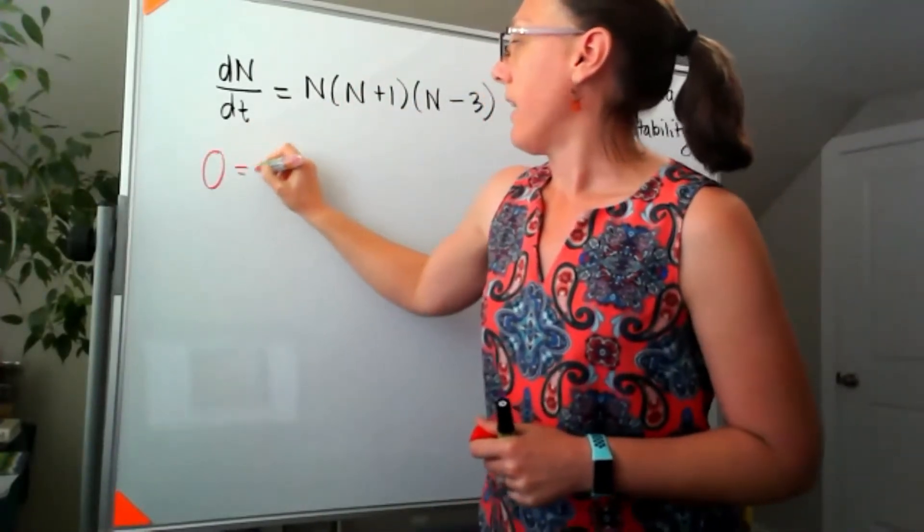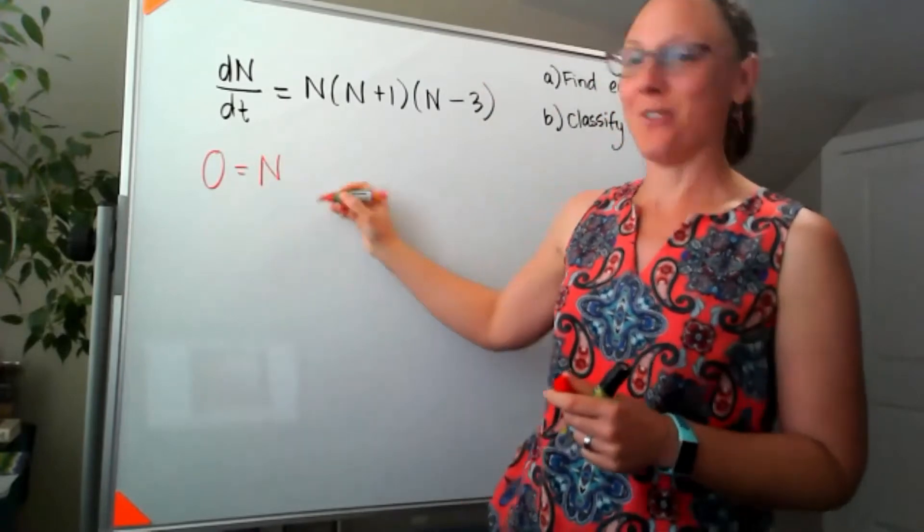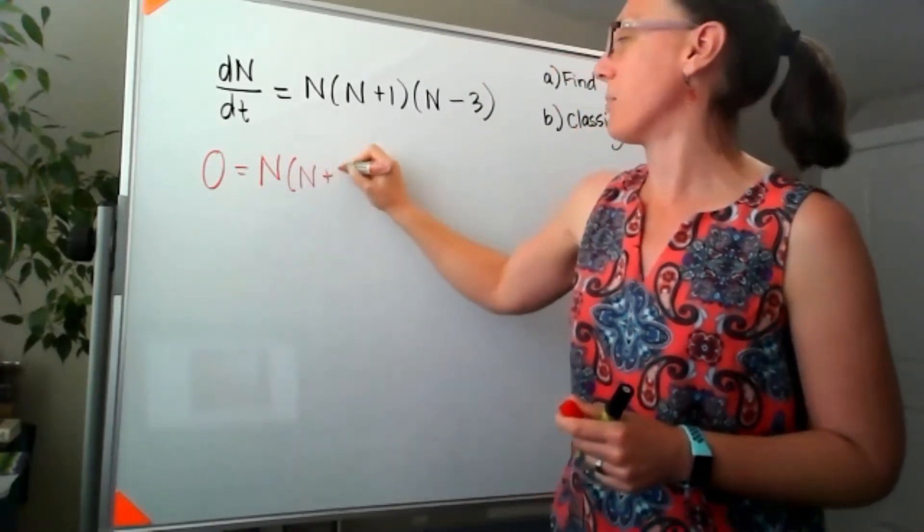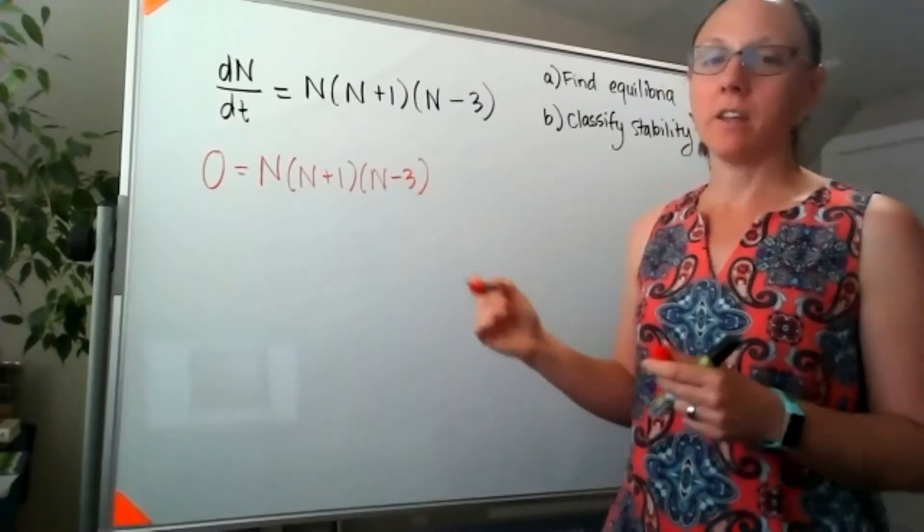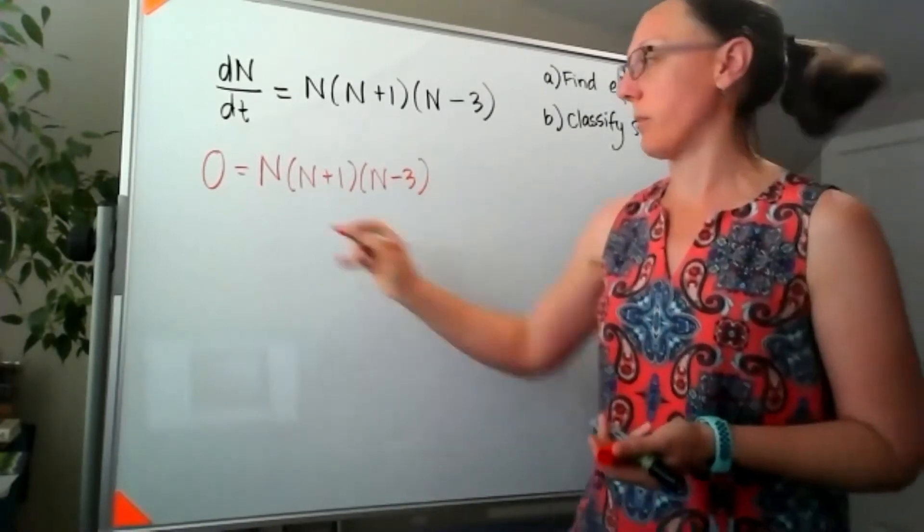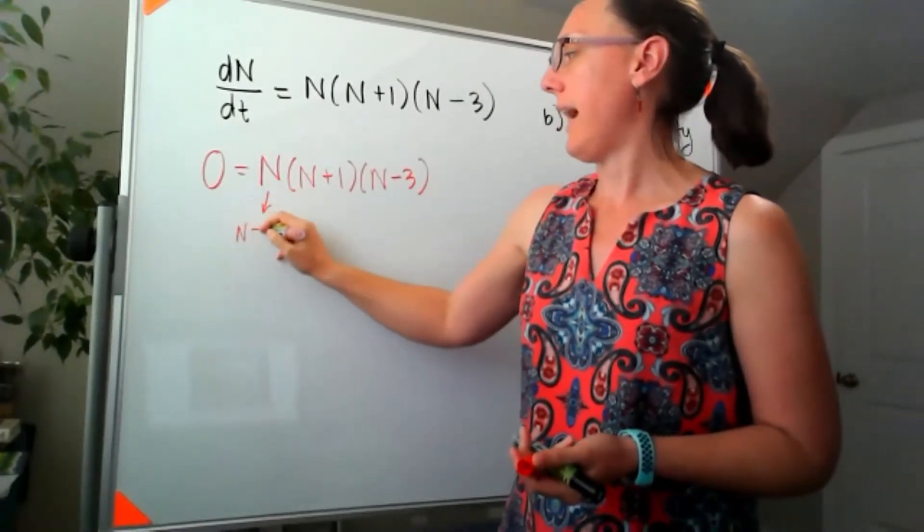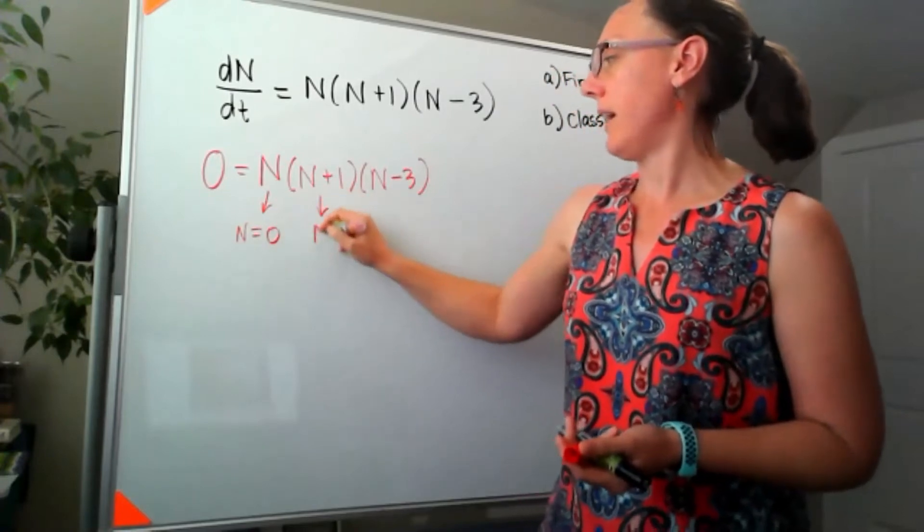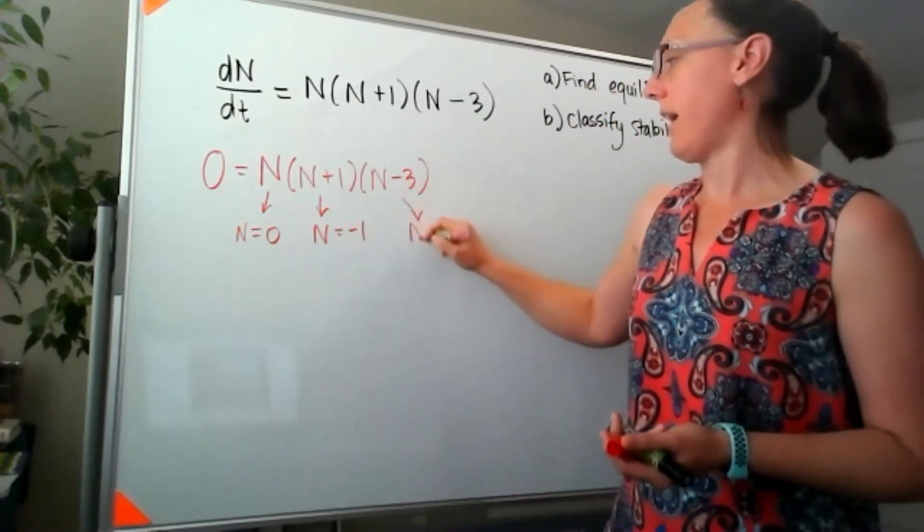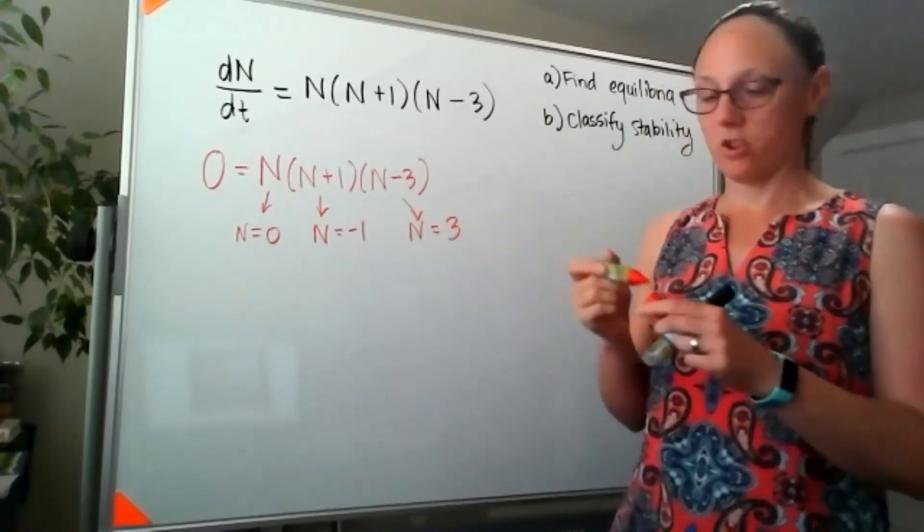I'm looking at n, or sorry, zero is equal to n times (n+1) times (n-3), which means that we have three equilibria here. n equals zero, n equals negative one, and n equals three.